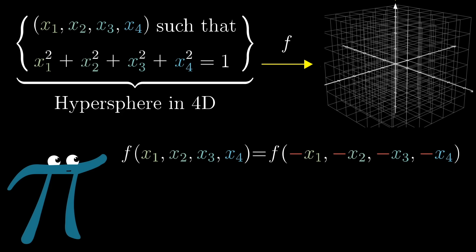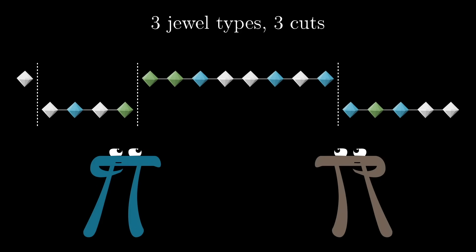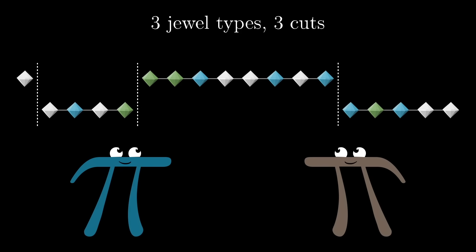I'll leave it to you to pause and ponder and think about how this could apply to the three-jewel case, and about what the general statement of Borsuk Ulam might be, and how it applies to the general necklace problem.